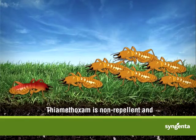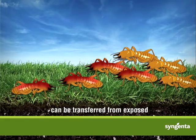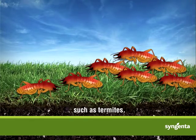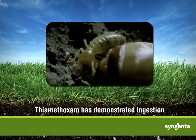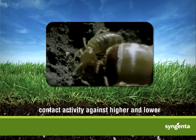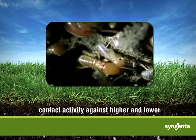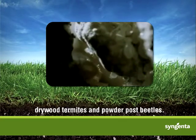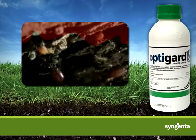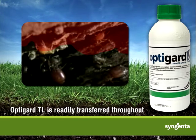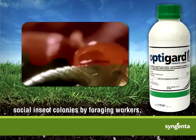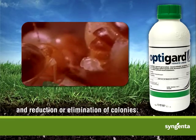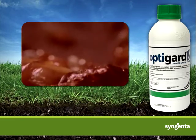Thiamethoxam is non-repellent and can be transferred from exposed to unexposed insects that exhibit social behavior, such as termites. Thiamethoxam has demonstrated ingestion and contact activity against higher and lower subterranean termite species, drywood termites, and powder post beetles. Optigar TL is readily transferred throughout social insect colonies by foraging workers, resulting in control of workers and reduction or elimination of colonies.